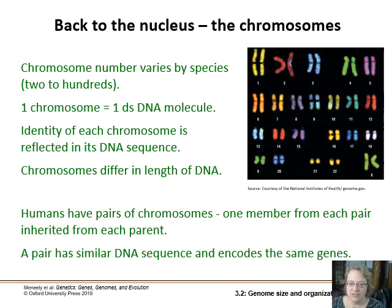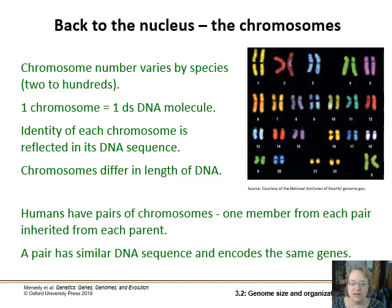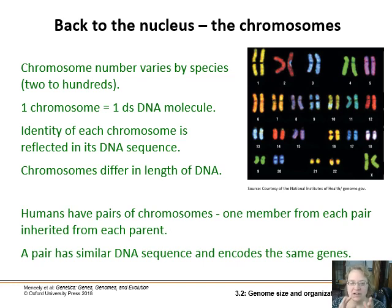Back in the nucleus, chromosome number varies by species anywhere from just two to hundreds. One chromosome is one double-stranded DNA molecule, and each chromosome is different depending on its DNA sequence — it can be long, short, tiny, or massive. In a diploid organism like humans, we have one pair of each chromosome in our cells: one inherited from your maternal parent and one from your paternal parent. Those have mostly matching DNA sequences — the same gene will be in the same place on both chromosomes — but there might be different alleles of each gene on one chromosome compared to the other.